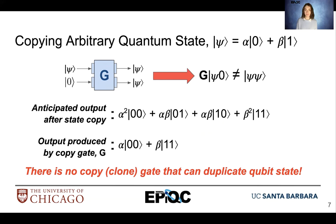There are some interesting observations we can make here. Unless alpha or beta is equal to 0, we did not copy the input state. In fact, the second state is an entangled state — if you measured one qubit, you would know the value of the second. That means some information was lost; some secret information about that quantum system was lost. We did not make two copies of psi at the output of the gate.